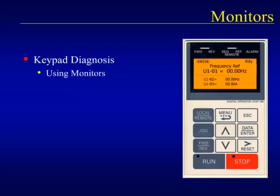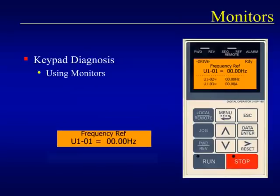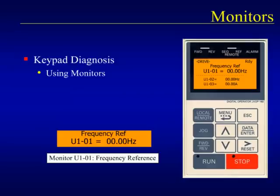The keypad can show us useful bits of information called monitors. Monitors show the status of the drive, such as the speed command, amount of current being sent to the motor, and whether all the drive inputs and outputs are open or closed. We will look closer at the monitors later in the presentation.